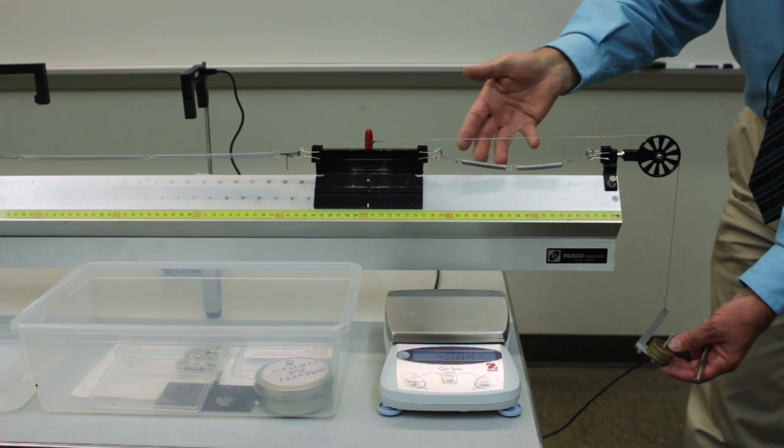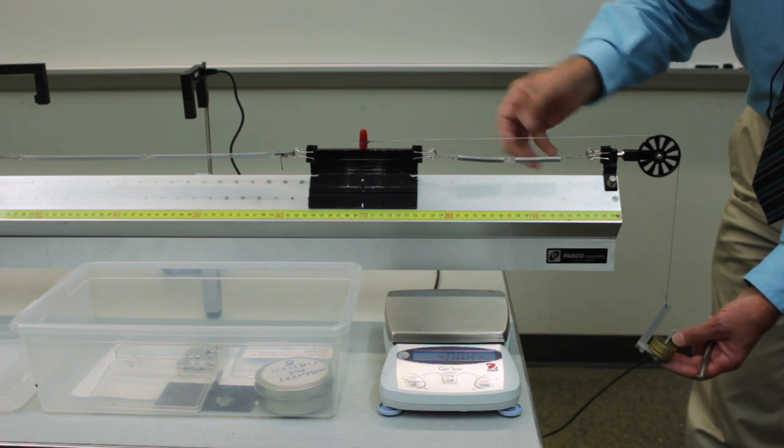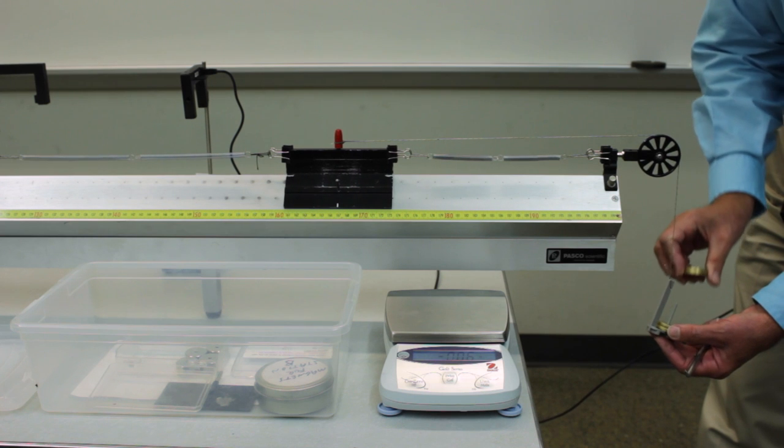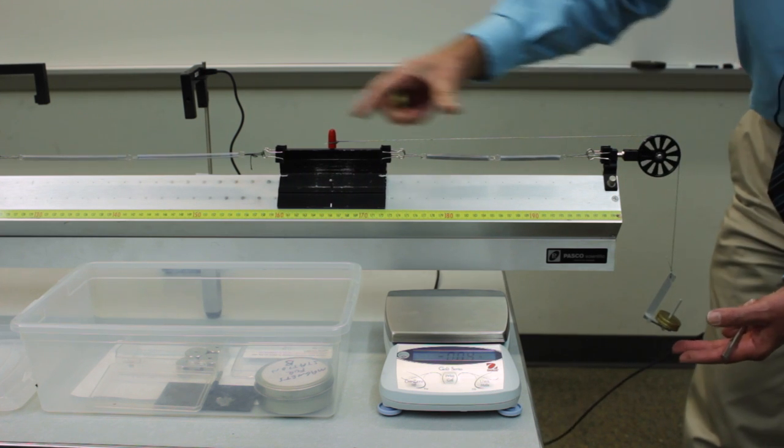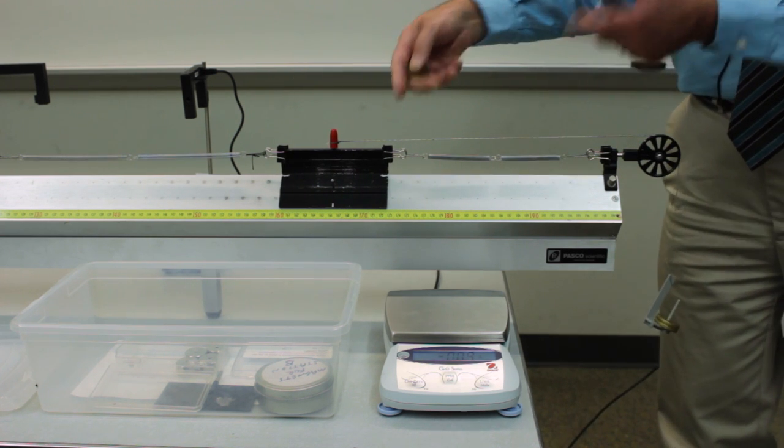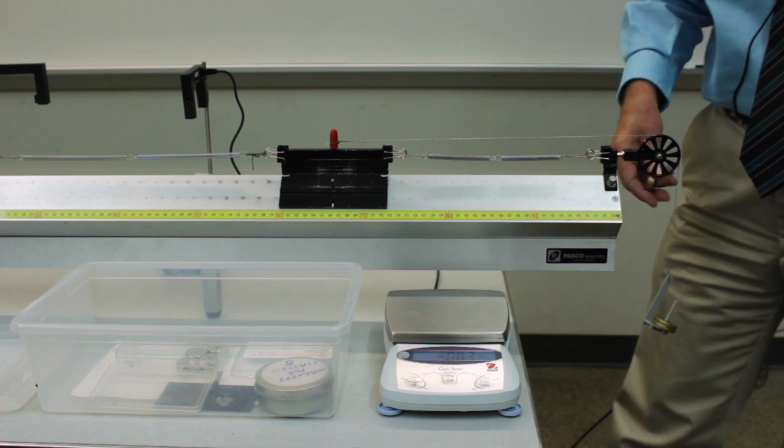So be careful that the amount of hanging mass is not so much that it causes these springs to completely collapse. Then they're no longer participating in the force on the system. So the range of masses that you use needs to be within the range where all of the springs are participating in the force on the system.